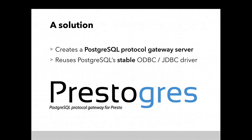The approach is to create a PostgreSQL protocol gateway server. It means Prestogres implements the PostgreSQL protocol — clients connect to Prestogres using the PostgreSQL protocol, but internally it runs Presto queries, not PostgreSQL. That's the architecture. With this approach, we can reuse existing PostgreSQL clients, and any clients can run Presto queries.